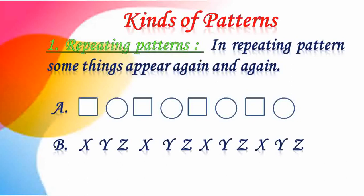X, Y, Z — again X, Y, Z. In the same way, X is repeating, Y is repeating after X, then Z is repeating after Y and so on. This is called a repeating pattern.